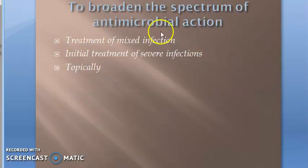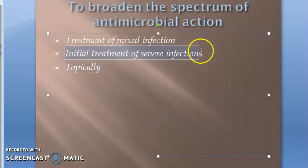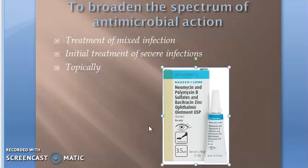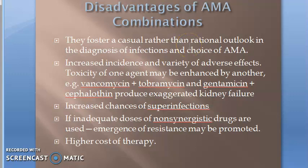The fourth objective is to broaden the spectrum of antimicrobial action. For mixed infections (many types of bacteria), you give a combination. For initial treatment of severe infections, you want to suddenly reduce the bacterial load. Topically, combinations are used because these antimicrobial agents are poorly absorbed — for example, neomycin, polymyxin, and bacitracin.